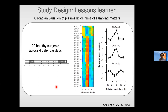Another factor to consider is the circadian variation of plasma lipids — the time of sampling matters. Here is an example from our lab from a few years ago, where 20 subjects were kept in the lab for four calendar days and blood was taken every four hours. For some lipid classes there is a clear circadian variation — particularly TAGs and DAGs, but also some other phospholipids. It is difficult to compare people who gave blood at different times of day, so be sure this information is recorded.